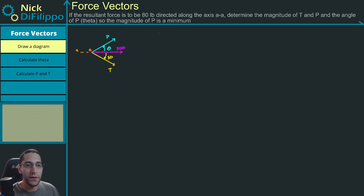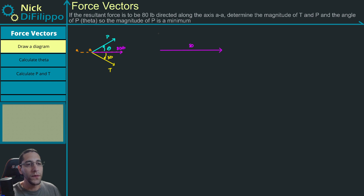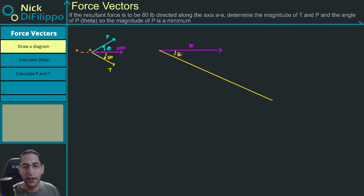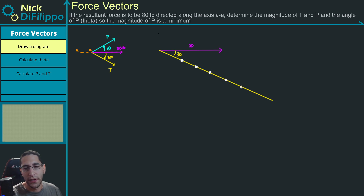What we're going to do is start by drawing a picture. I'm going to draw an 80-pound force and a line which represents a lot of possible choices that T could be. T lies somewhere along this line, so this angle right here is going to be 30 degrees. I'm going to pick a few points along that line.